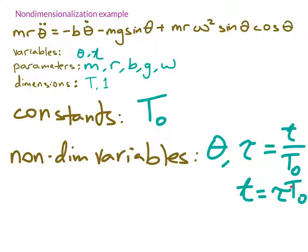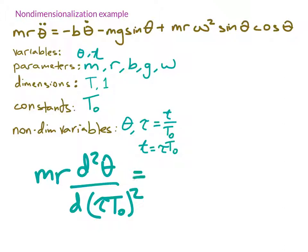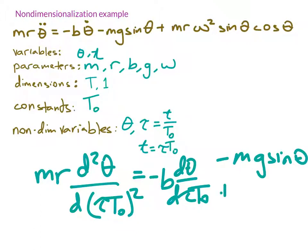Now I'm ready to substitute this information back into the original equation and simplify. Writing the equation out, I have mr d²θ/dτ², T₀², is equal to negative b dθ/dτ T₀, minus mg sin θ, plus mr ω² sin θ cos θ.